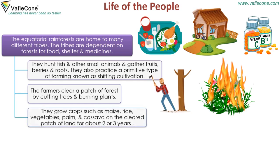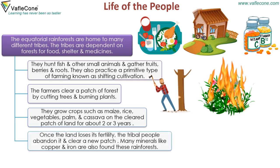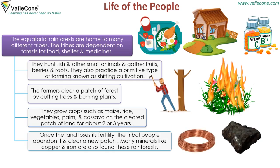They grow crops such as maize, rice, vegetables, palm and cassava on the cleared patch of land for about two or three years. Once the land loses its fertility, the tribal people abandon it and clear a new patch. Many minerals like copper and iron are also found in these rainforests.